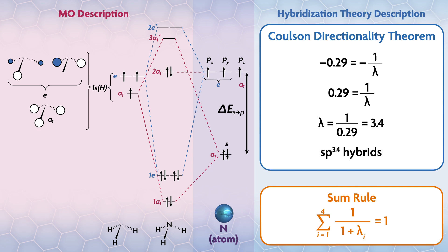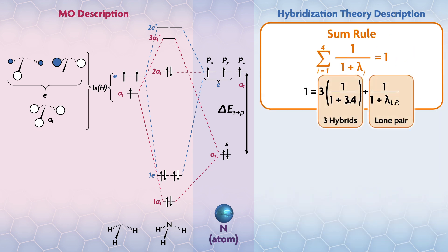The only thing we don't know for a hybridization picture is what hybrid is used to hold the lone pair. We can find this using the sum rule. We have three identical hybrids used to bond to the hydrogens which are sp^3.4, and we have the hybrid that is used to hold the lone pair on nitrogen, which we don't know yet. The equation looks like this.